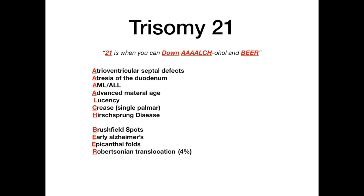Let's go through the high yield associations. Atrioventricular septal defects (ASDs) are common in patients with trisomy 21. Duodenal atresia is very high yield — look for the double bubble sign on x-ray. Patients with trisomy 21 are more likely to develop AML and ALL. Advanced maternal age is a risk factor: the older the mother when she conceives, the more likely the child is to be diagnosed with trisomy 21. Nuchal translucency is seen when screening in utero. Single palmar crease and Hirschsprung disease are also very high yield associations. Brushfield spots are little spots visible on the eyes.